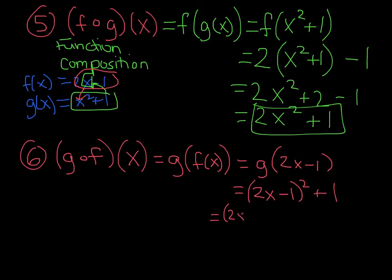From there, you can use the FOIL method and multiply it all out. You end up getting 4x² - 4x + 1 + 1. So your final answer is 4x² - 4x + 2.